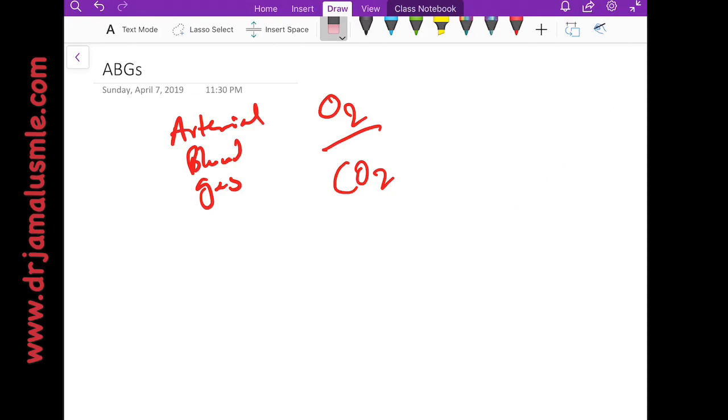The way that the ABGs are reported, usually they have it in this manner: pH slash CO2 slash O2 slash and bicarb.